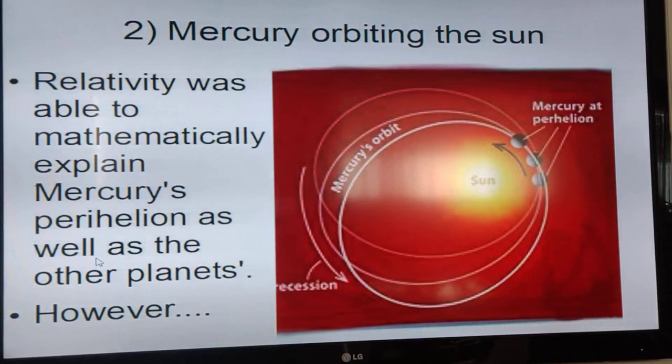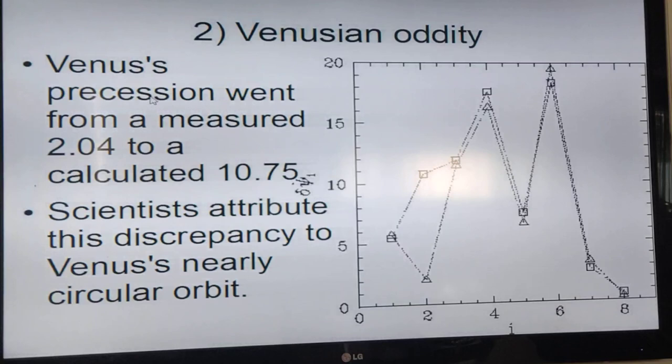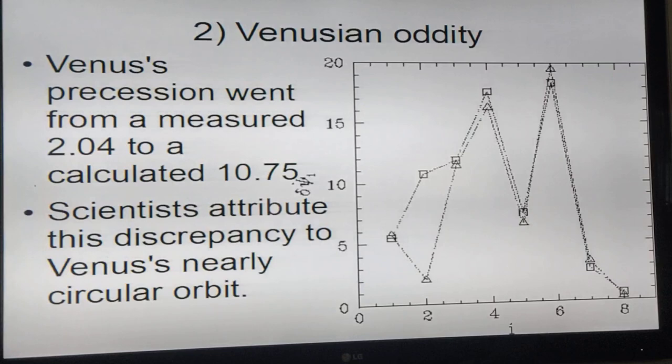However, a problem came up with this. Venus precession was measured as 2.04 arc seconds per century. Using relativity it came out to be 10.75. If you look at this graph, Mercury matches perfectly with relativity. Earth matches perfectly. Mars is close enough. Jupiter is close enough. Even though relativity predicted all of these meeting points where the precession was exactly what it was supposed to be, it didn't work for Venus.